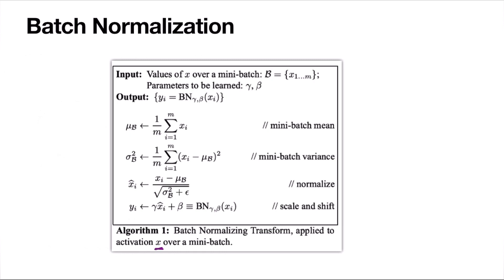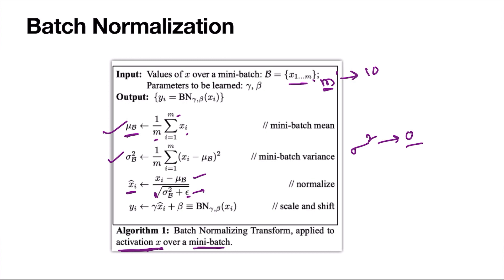This x is an activation from a previous intermediate layer over a mini-batch of m elements. For these m values, we calculate the mean by summing and dividing by m, then calculate the variance. The standardization step subtracts the mean and divides by the standard deviation — that is why we need the square root. We add a small constant epsilon to avoid division by zero in cases where variance is 0, which would make the expression undefined.